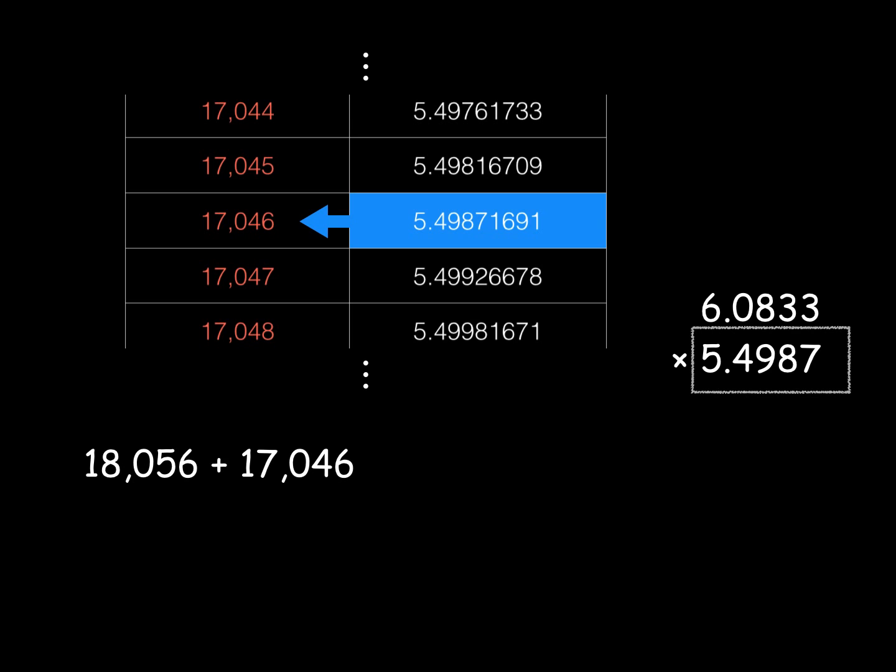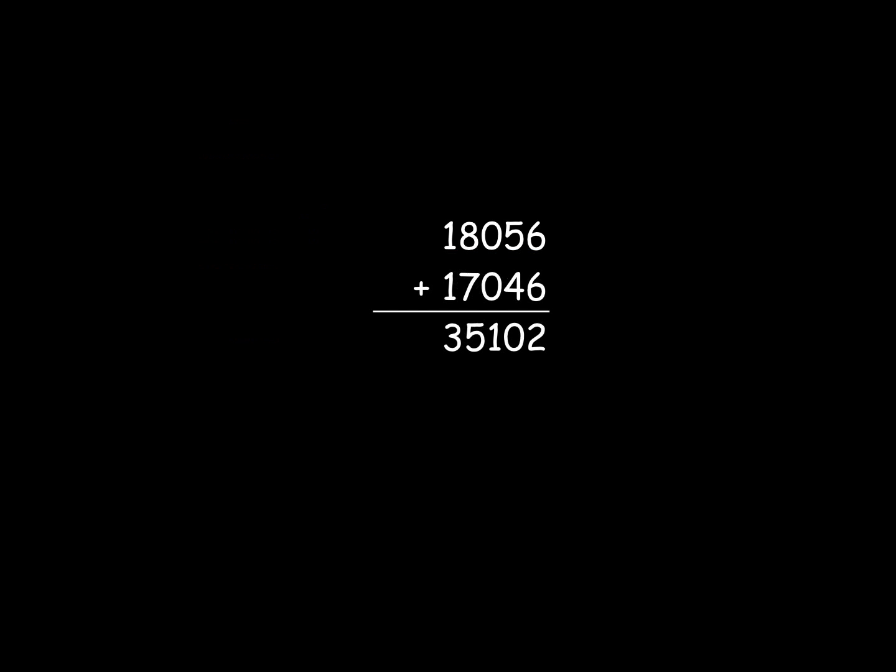Anyway, the next number is a little earlier in the table. We add the two logarithms together and see that the approximate answer to our multiplication problem is whatever 1.0001 to the 35,102 power is. And to find that out, we scroll that much farther down in the table and see that the answer is approximately 33.449.